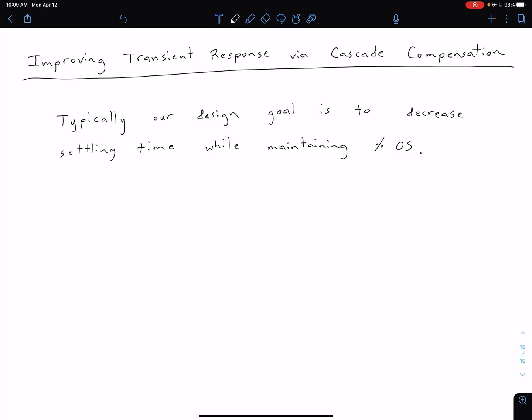Now that we know how to improve the steady-state error via cascade compensation, we want to turn our attention to how to improve the transient response via cascade compensation. Typically when we're doing this, our design goal is to decrease our settling time, T sub S, while maintaining a certain percent overshoot.